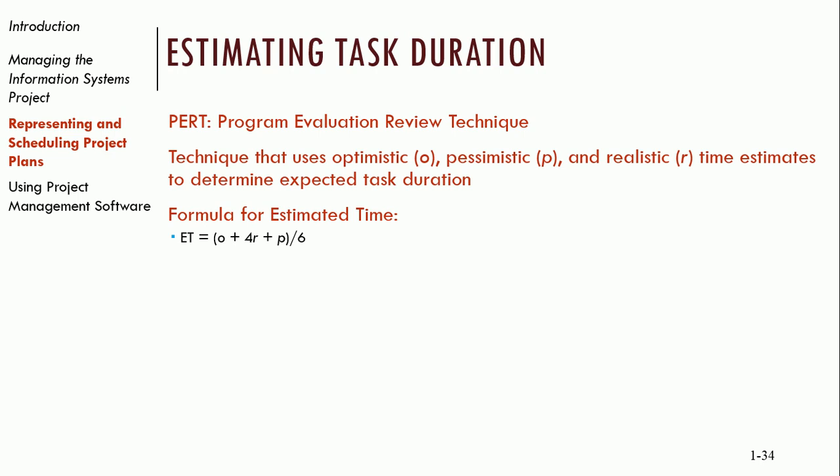We use a little formula: estimated time = (optimistic + 4 × realistic + pessimistic) ÷ 6. That gives us a weighted average, and as you can see, the average is weighted heavily towards the realistic estimate.